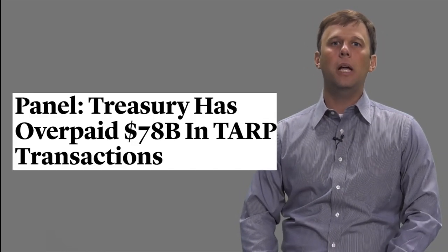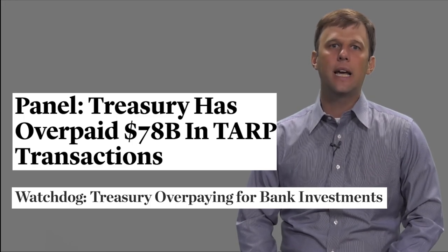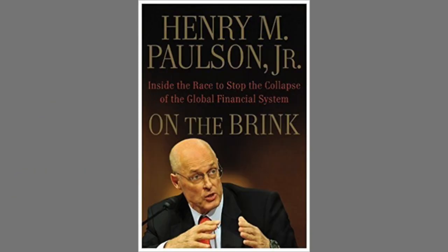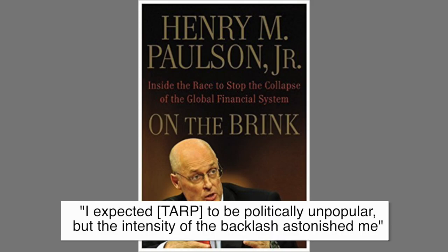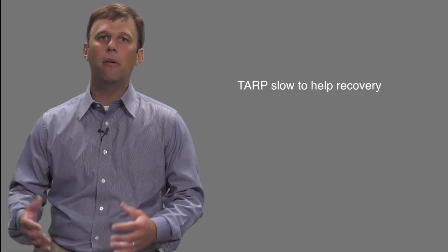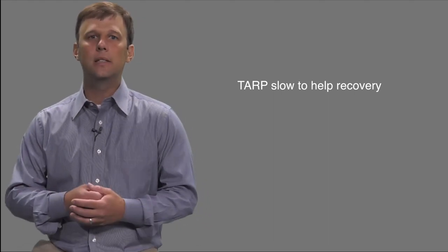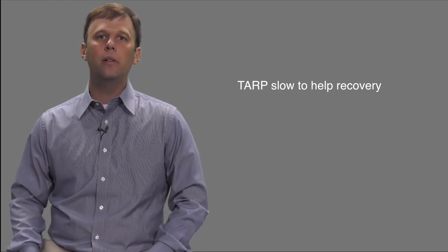And those charges were made. Just four months after TARP had passed, a Senate panel claimed that TARP had paid $78 billion more for its assets than they were worth. This charge was particularly devastating because the Treasury Secretary, Hank Paulson, was the former chairman and CEO of Goldman Sachs, and it seemed to many that he was giving a handout to his former colleagues. As Paulson later wrote in his book On the Brink, quote, 'I expected TARP to be politically unpopular, but the intensity of the backlash astonished me.' There were two other major concerns about the program. The first concern was that TARP disbursed its money very slowly, extending the period of market turmoil. There were technical reasons for this, but it made the program less useful at quickly reviving the financial markets.